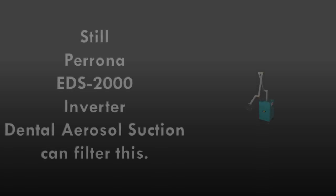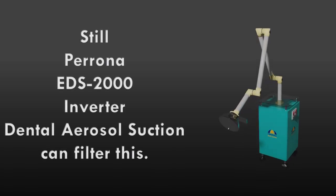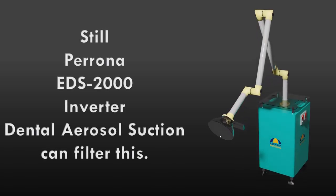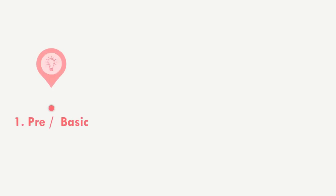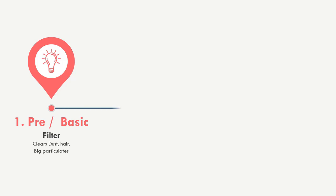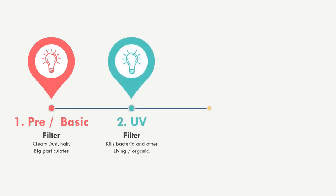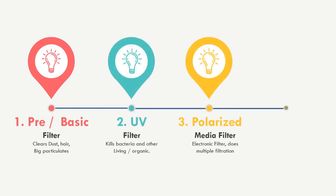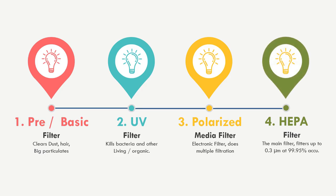The above facts are true so far, but be assured that Perona's EDS-2000 Inverted Dental Aerosol Suction can filter this. EDS-2000 uses 4-filter technology, and 4 types of filters are used in order to produce filtered air. This order is important to achieve quality filtered air.